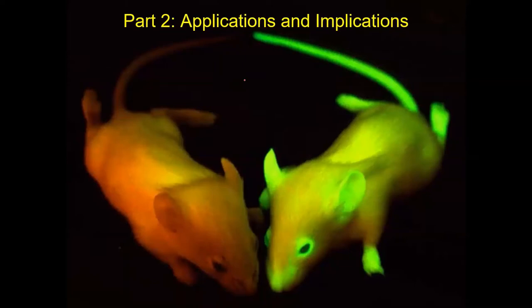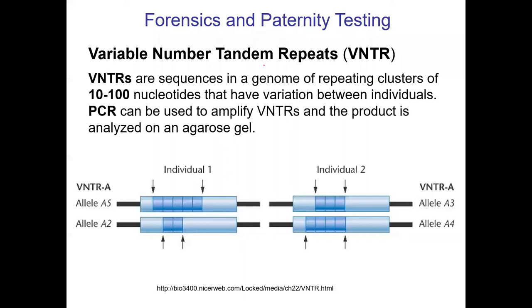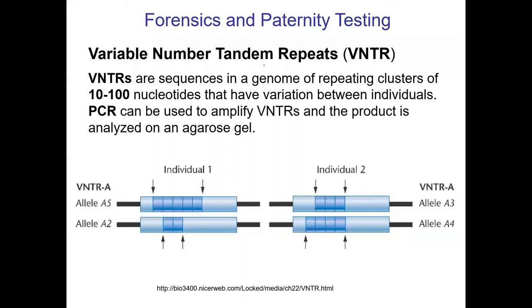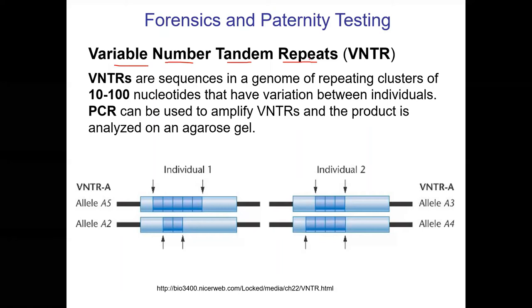Now let's talk about forensics and paternity testing, which use essentially the same technology for different purposes. The technique used now is called the Variable Number Tandem Repeat (VNTR) method, which uses PCR. We're looking for differences between individuals — our DNA is 99% identical, but in the human genome there are places with repeats called VNTRs. Some people have more repeats, some have fewer, and there's one area with a reasonable amount of variability.